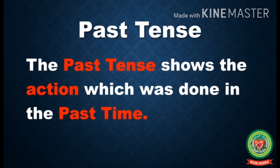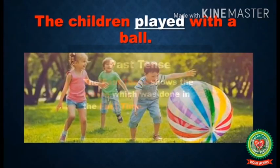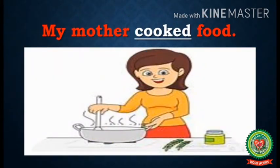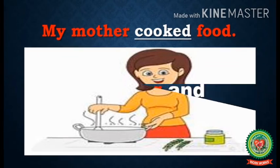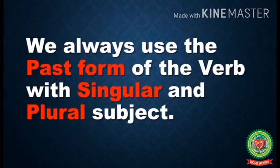Kids, the past tense shows the action which was done in the past time. Let us discuss some examples. First example is: the children played with a ball. Second example is: my mother cooked food. Kids, we always use the past form of the verb with singular and plural subjects in the past tense.